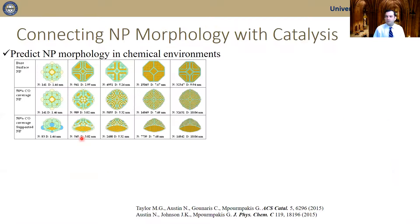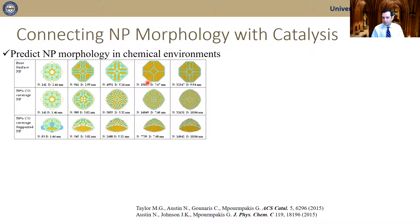How can we use these models? I will show an example from our research on CO oxidation on gold. First, you can calculate the equilibrium shapes of gold nanoparticles at different sizes by combining density functional theory and Wulff construction methods. Here I show how the morphology of gold nanoparticles changes from 1.5 all the way to 10 nanometers. When exposed to a reaction environment such as carbon monoxide, the nanoparticles become more spherical.